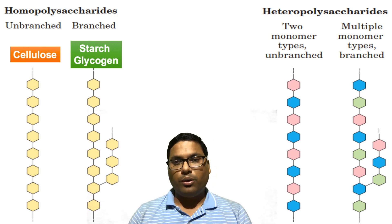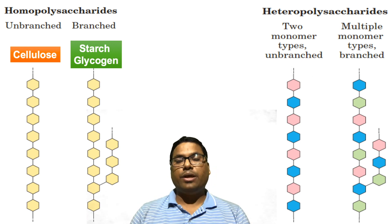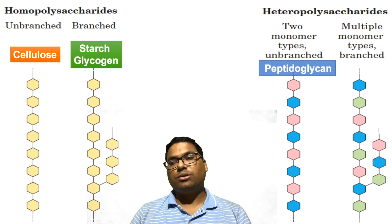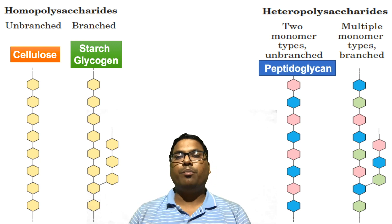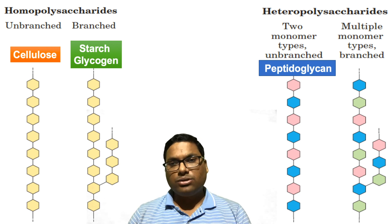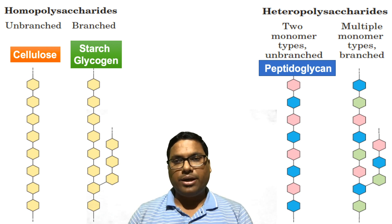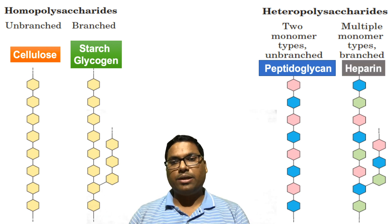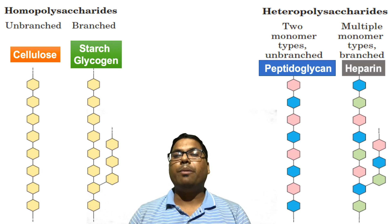In terms of heteropolysaccharides, an example of an unbranched type is peptidoglycan, and an example of a branched heteropolysaccharide is heparin.